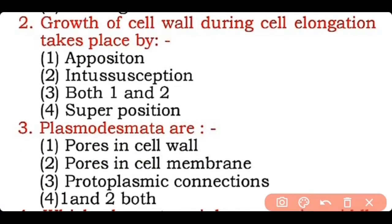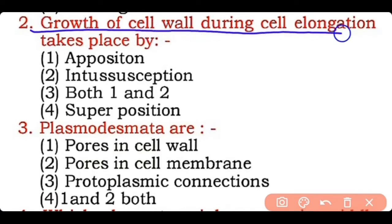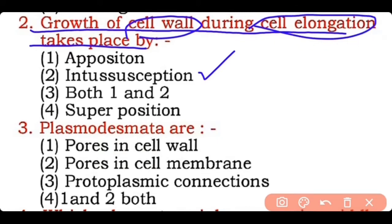Question 2: The growth of cell wall during cell elongation takes place by — apposition, interception, both one and two, or superposition? Correct answer is option two — the growth of cell wall during cell elongation takes place by interception, which is the deposition of new material between the existing components of the cell wall.